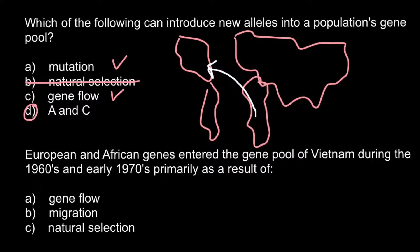Next question: European and African genes entered the gene pool of Vietnam during the 1960s and early 1970s, primarily as a result of... Here are three answers to choose from: gene flow, migration, or natural selection.